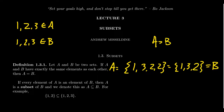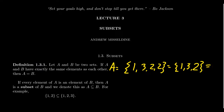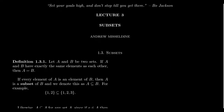Repetition doesn't matter because containment is not affected by repetition. The same thing applies to order — if I list the elements in a different order, so if I write the set {1, 2, 3} as set C, C still contains the elements 1, 2, and 3 and nothing else. So C is likewise equal to those sets, because equality is determined by containment. If two sets contain exactly the same elements, then we say they're equal.